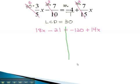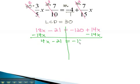We can solve this equation just like before now. Get the variable on one side by moving the smaller one, subtracting 14x from both sides. 4x minus 21 equals negative 120.